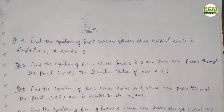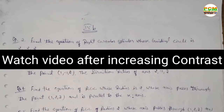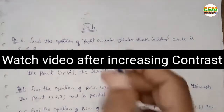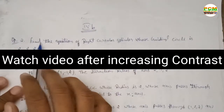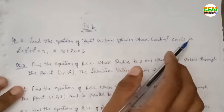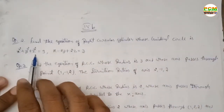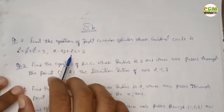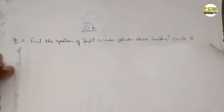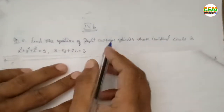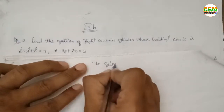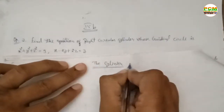Hello friends, welcome again. This is Prashan and we are solving an exercise from BSc Mathematics, the cylinder chapter. Today I will discuss question number two. Question two says: find the equation of a right circular cylinder.